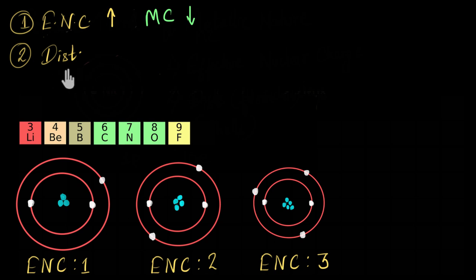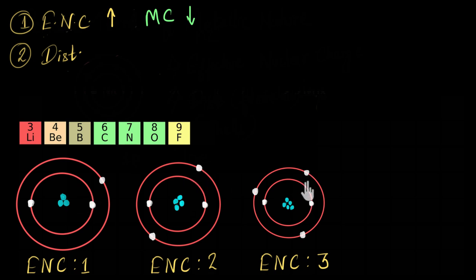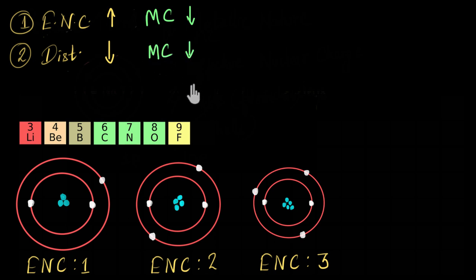Now let's talk about the effect of distance from the nucleus. As we saw in the video on atomic radius, the atomic radius reduces as we go across a period, because the increasing nuclear charge pulls the shells closer. So the distance between the nucleus and the valence electron is decreasing, which means the pull between them increases, making it harder and harder to give away the valence electron. So metallic character reduces due to this factor as well. Because of both these variables, as we go across a period, metallic character reduces.